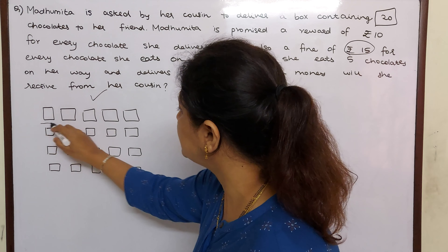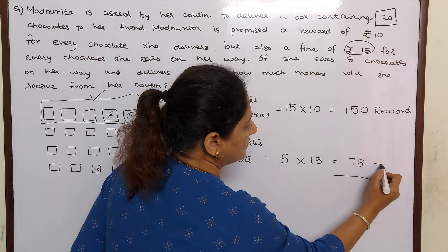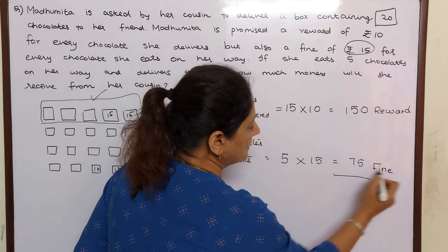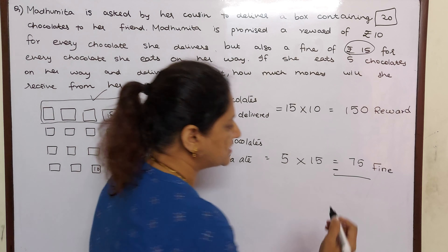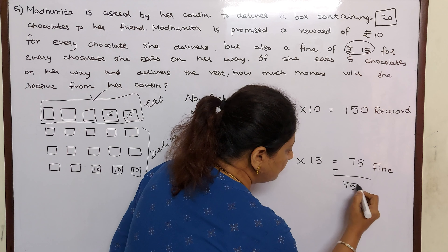So we can say 150 rupees is her reward and 75 rupees is her fine. So in the remaining, how much will she get? Out of 150, if 75 goes away, she will get 75 rupees only. Hope you understood this sum, children. If you break the sentence and visualize it, the sum will be very easy. Bye.